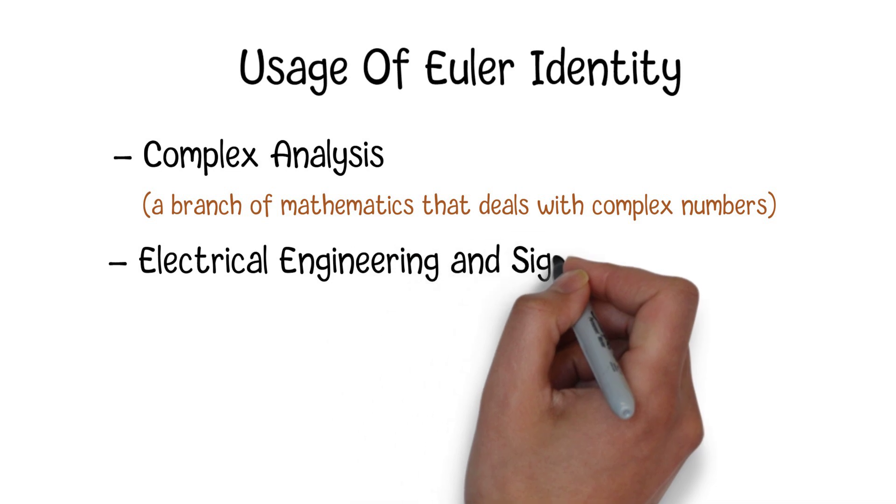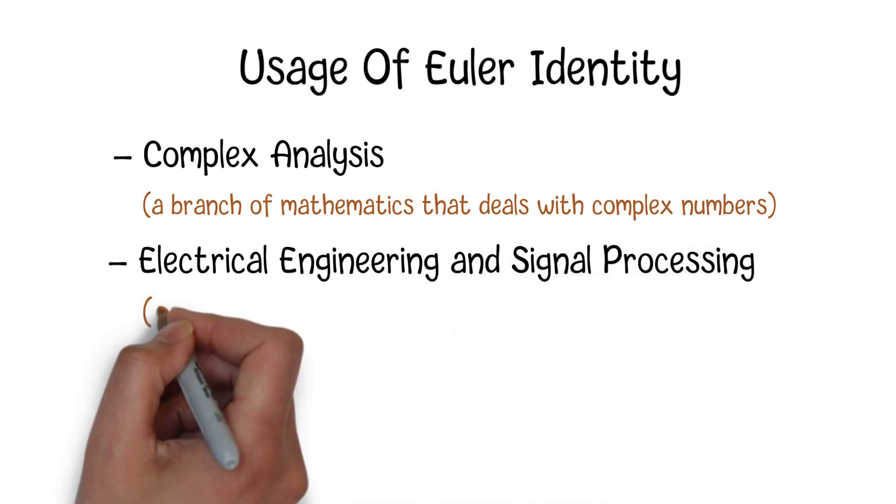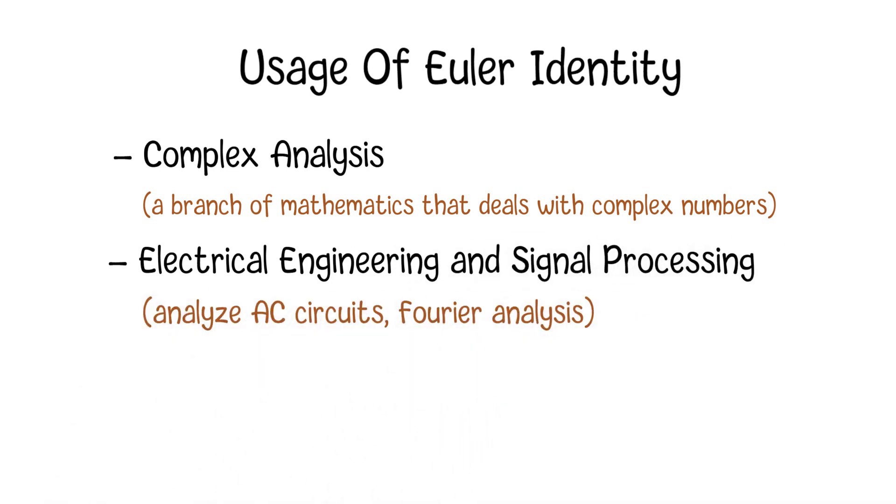Also, in electrical engineering and signal processing, the Euler identity is used to analyze and represent alternating current circuits, as well as to transform signals between time and frequency domains using Fourier analysis.